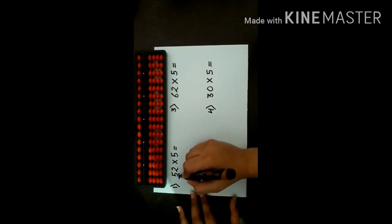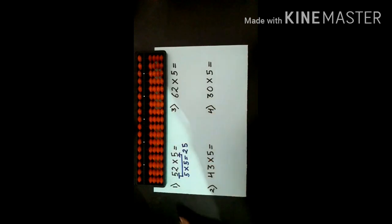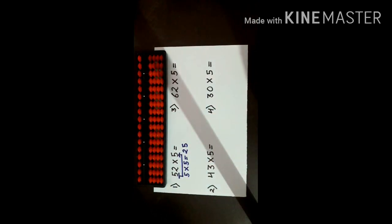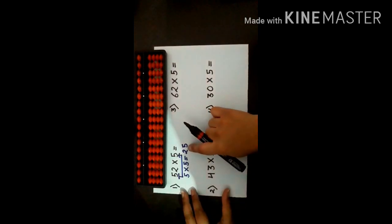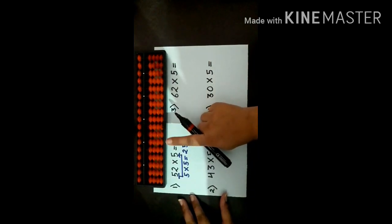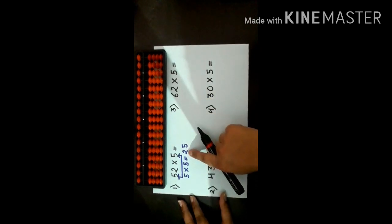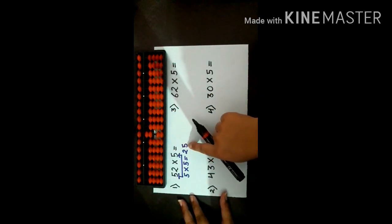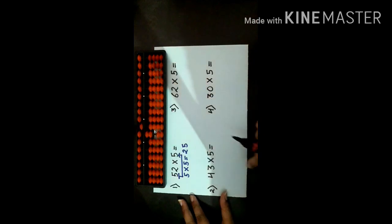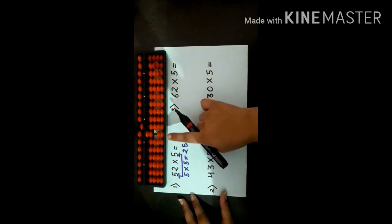First of all, multiply the first digit with 5. 5 into 5 is 25. It is a double digit number, so you don't have to use the zero rule here. Now, from where do you start your calculations on the abacus tool? From the 100s rod — units, 10s and 100s. So the first number is 2, place 2 in the 100s rod. The second number is 5, so place 5 in the 10s rod. First number in first rod, second number in second rod, and you start from the 100s rod.